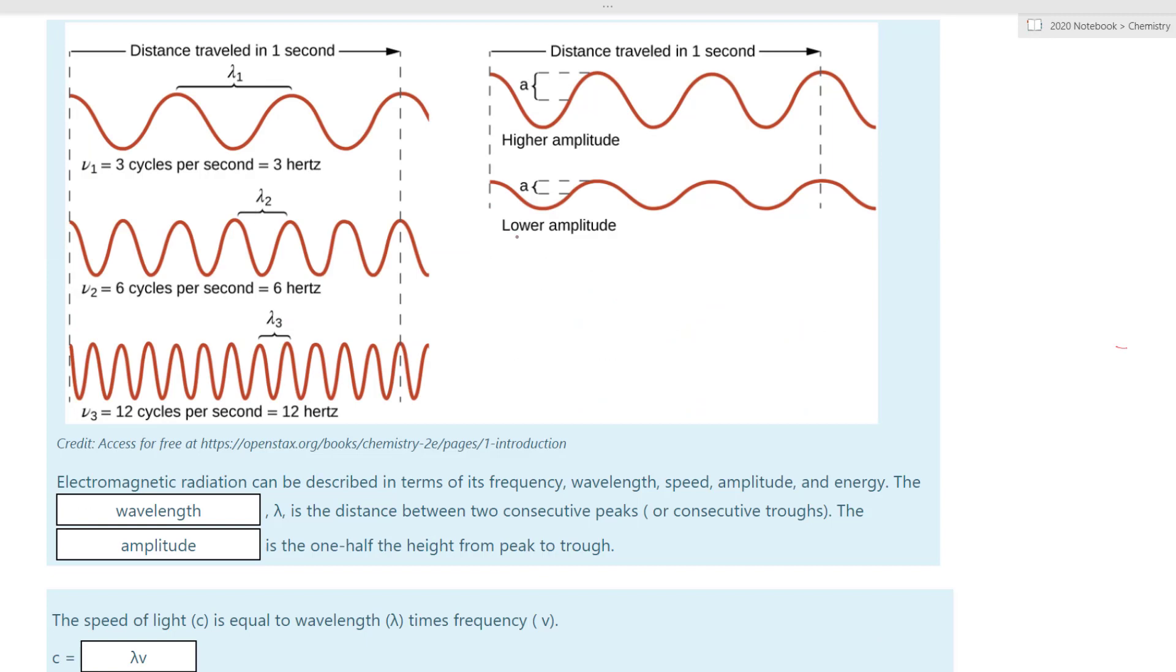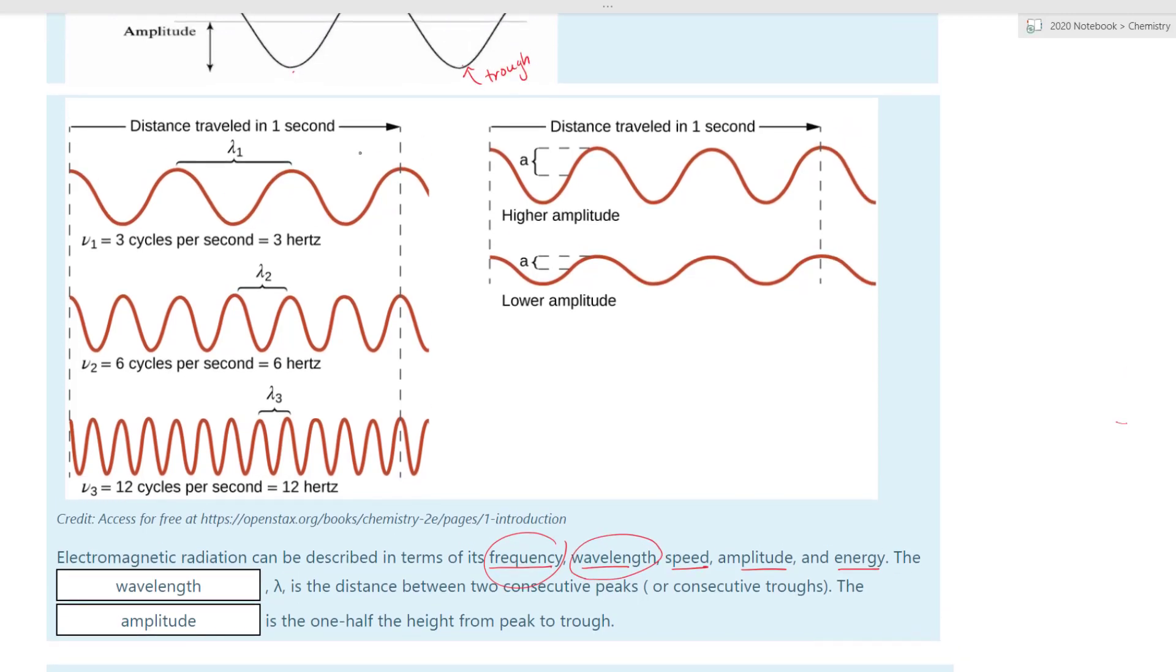Now let's go down and look at this image and talk about in terms of frequency. Electromagnetic radiation can also be described in terms of frequency, wavelength, speed, amplitude and energy. But for now if we look at this right here, this will tell us the frequencies as well as the wavelength. If we notice, let's look at this. Here we have the distance traveled in one second. So all of these waves, this entire wave traveled in one second. But notice how they have different cycles. So for this one, it has three cycles. One, two and three.